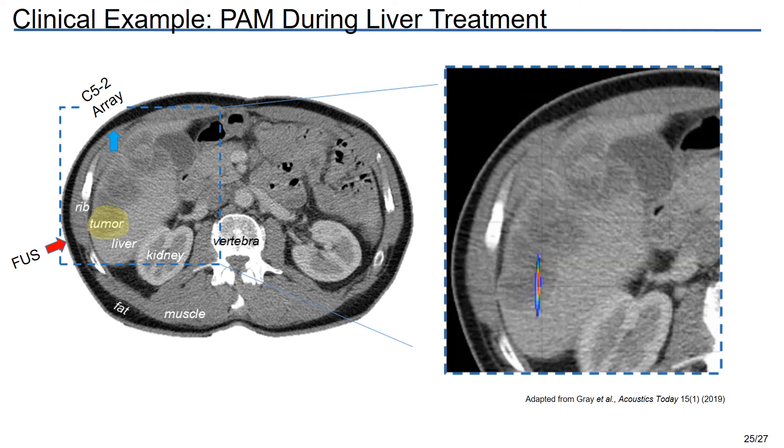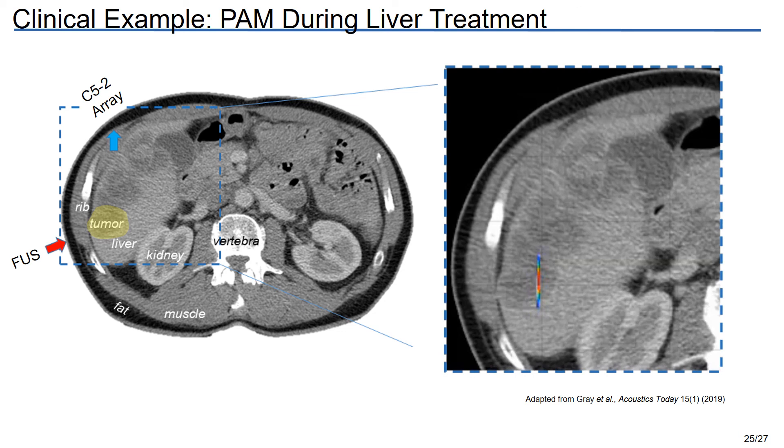The last bit of data I'd like to show you is a clinical example from PAM recorded during a liver treatment. The scenario is shown here on the left we have focused ultrasound treating a solid liver tumor and we're listening in on therapy with a C52 array. The resulting PAM images are superimposed on a section of the CT on the right and PAM was calculated using the RCB algorithm and a patient specific sound speed estimate. We can see that even though the cavitation activity was occurring pretty far from where the array was listening about 11 centimeters in this case quite clearly cavitation monitoring in vivo with a handheld array is feasible.